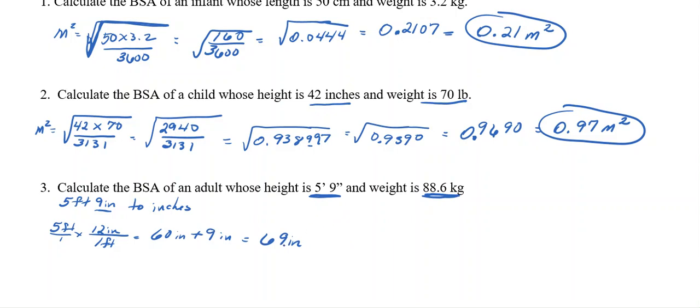Now, I can either change this to centimeters or change the 88.6 kilograms to pounds. So it's 2.2 pounds over 1 kilogram. So 88.6 times 2.2. I get 194.92.